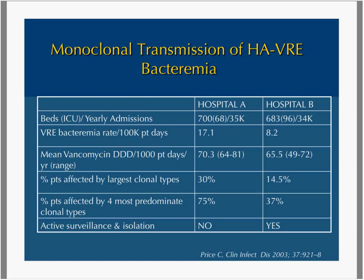Here is another very interesting study looking primarily at a monoclonal — single strain — suggesting transmission in two different hospitals. The vancomycin usage in both hospitals was approximately the same, yet their VRE bacteremias were very different. This was really attributed to some of the infection prevention strategies, including surveillance, that were used.